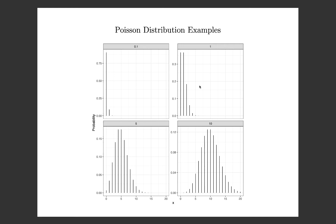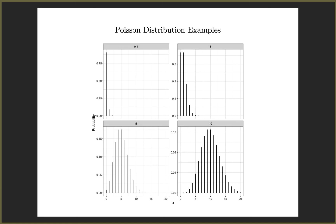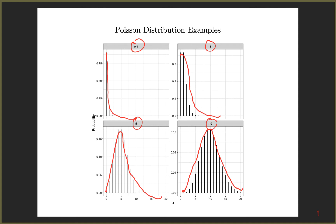Here are some examples of what Poisson distributions can look like. With a rate of 0.1, the distribution is very heavily skewed to the right. As we increase the rate to 1, it's still quite skewed. At 5, it's skewed but not nearly as bad. And at 10, it looks pretty well normal — single-peaked and more or less symmetric, though not exactly. So depending on the rate, we get very different shapes.